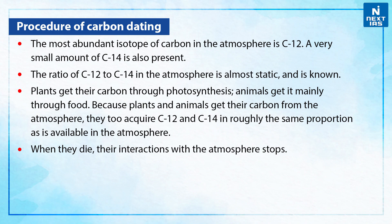Let us talk about the procedure of carbon dating. The most abundant isotope of carbon in the atmosphere is C-12. A very small amount of C-14 is also present. The ratio of C-12 to C-14 in the atmosphere is almost static and is known. Plants get their carbon through photosynthesis; animals get it mainly through food. Because plants and animals get their carbon through the atmosphere, they too acquire C-12 and C-14 in roughly the same proportion as is available in the atmosphere.